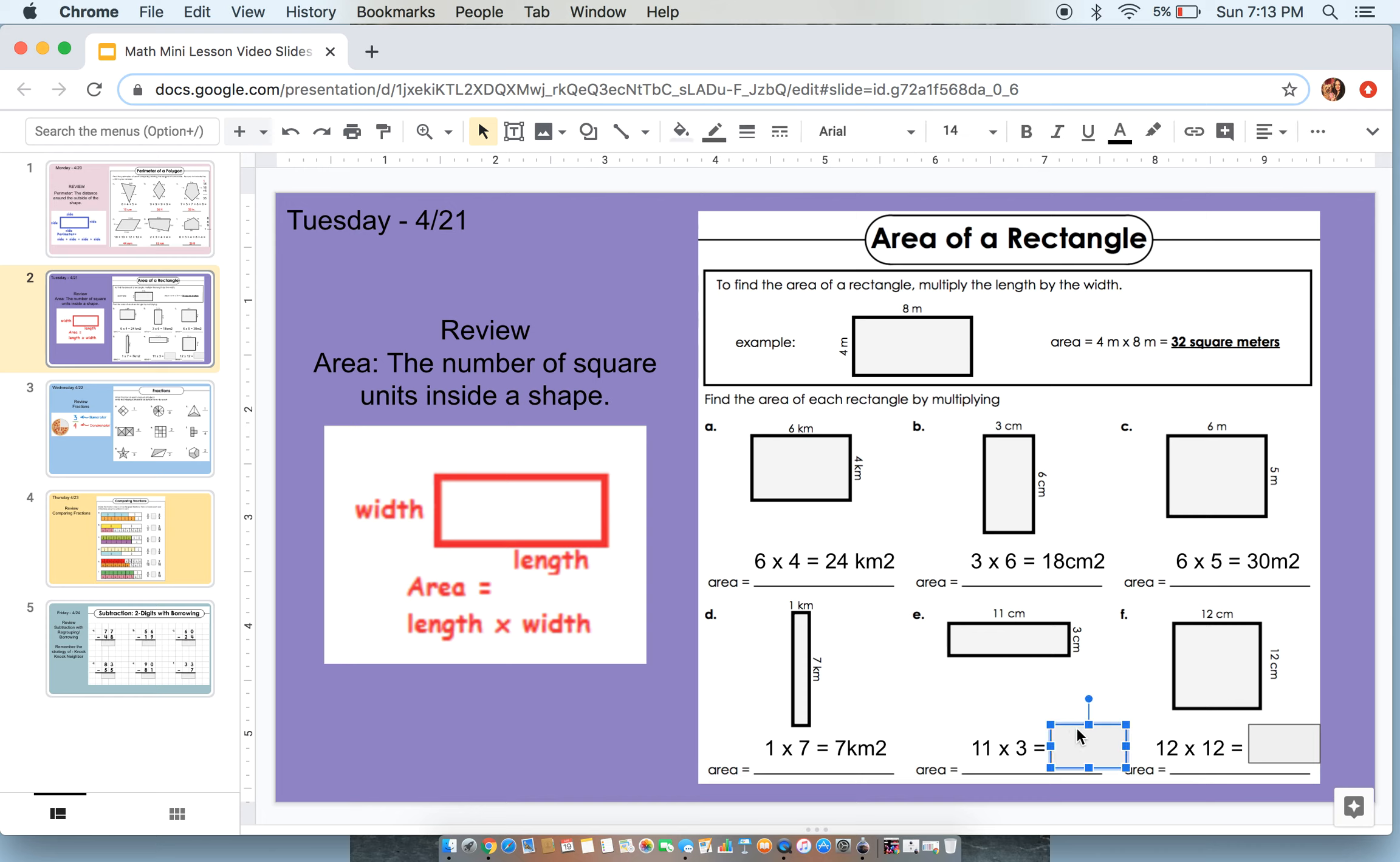All right. Looking here, our length is 11 centimeters and our width is 3 centimeters. 11 times 3 is 33 centimeters squared.